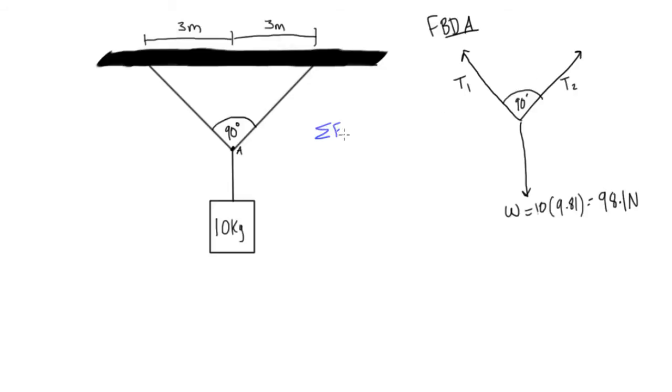So we can first of all write this, sum of forces x equals zero, that's because this is definitely in static equilibrium, it's not accelerating to the right or the left. And also what we should do is we should add our coordinate axis with our positive x direction and our positive y direction that we're going to be referencing.